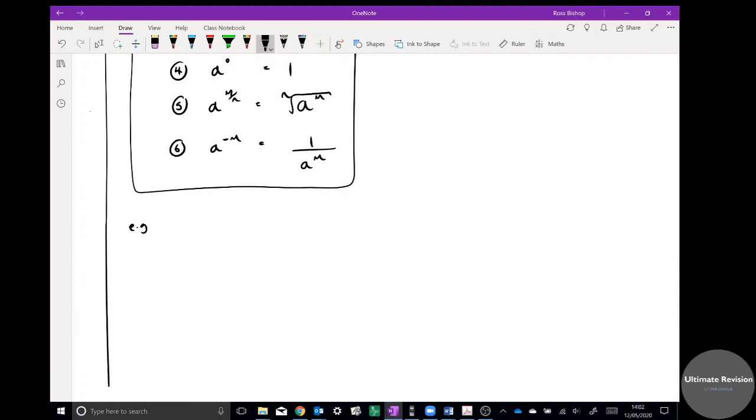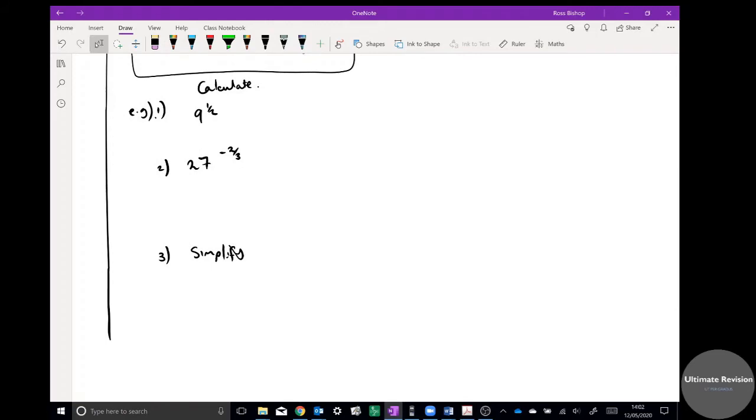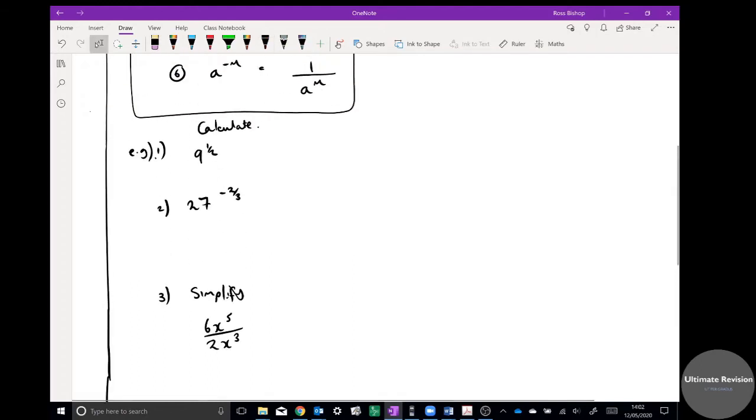The examples today: example one, calculate or evaluate nine to the half. Example two: 27 to the negative two thirds. Three: simplify six x to the five over two x to the three.